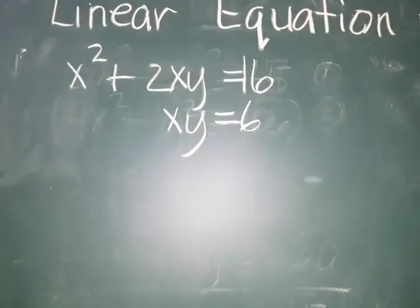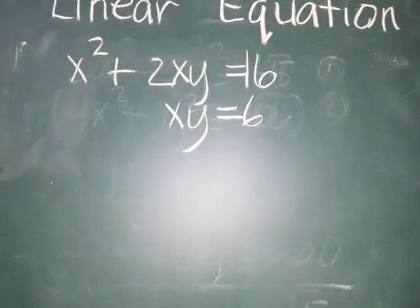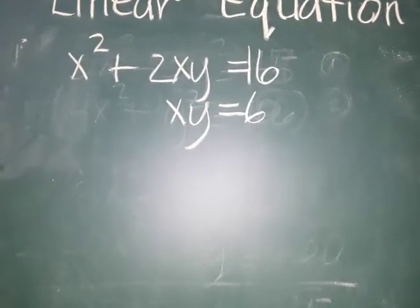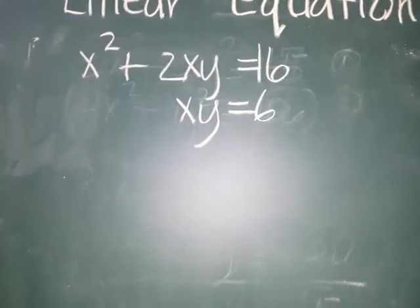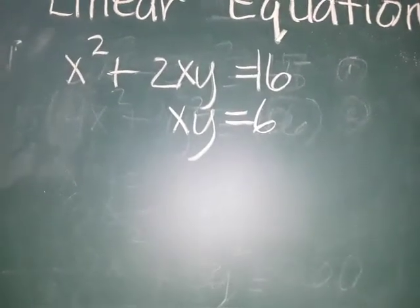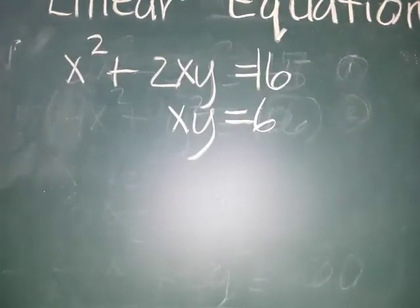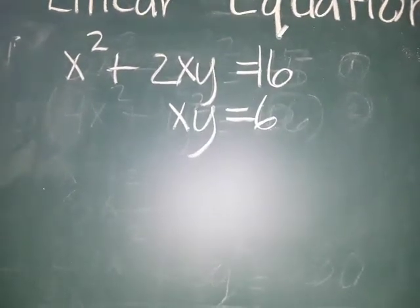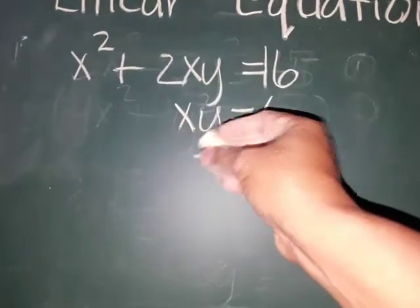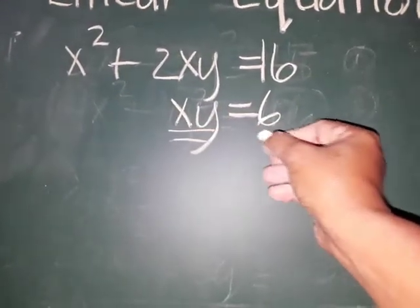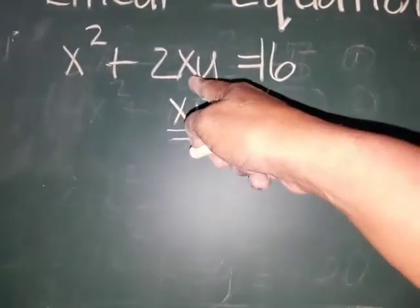For example number 3, we have x squared plus 2xy is equal to 16, and xy is equal to 6. In this case, no need to use elimination — let's just use substitution. Since we already have xy equal to 6 in equation 2, let's substitute this into equation 1.